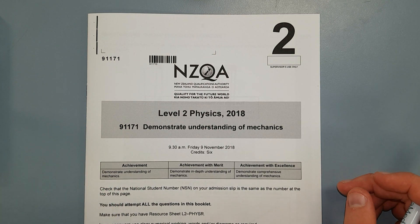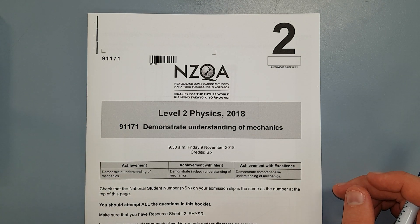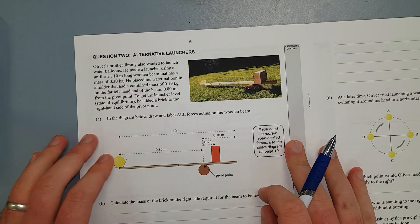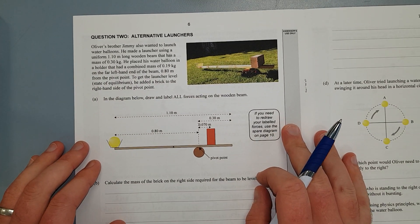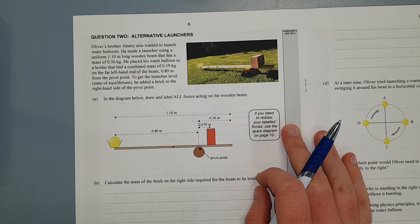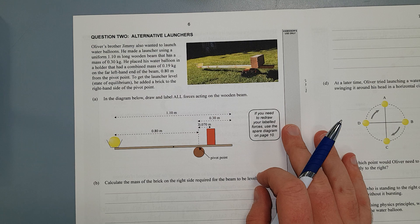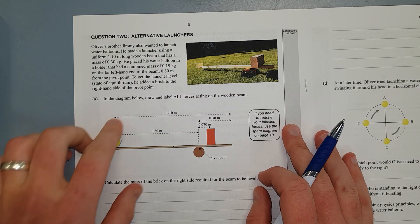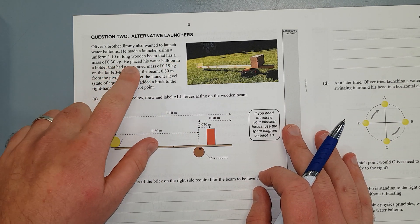With this video I'll be working through question 2 of the level 2 2018 mechanics exam. Question 2. Oliver's brother Jimmy also wanted to launch water balloons. He made a water, he made a launcher using a uniform 1.1 meter long wooden beam that has a mass of 0.3 kg.